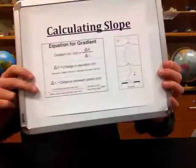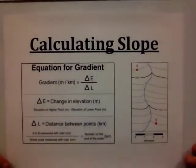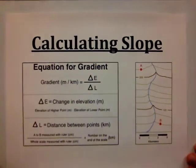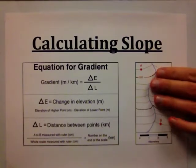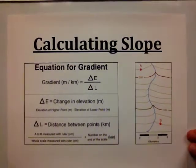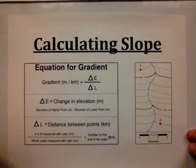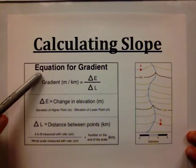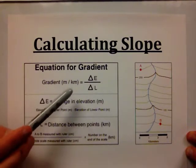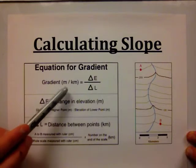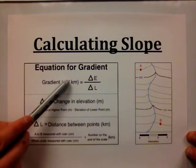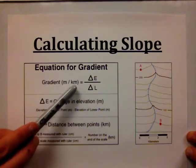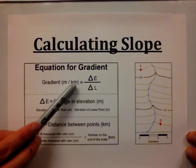The next and most frequent calculation we do with topographic maps is calculating slope, also called gradient. This is very common because contour lines show changes in elevation, so we can easily calculate rise over run. The equation for gradient — in this example meters per kilometer, though it could also be feet per mile — requires that your elevation units and distance units stay in the same measurement system.